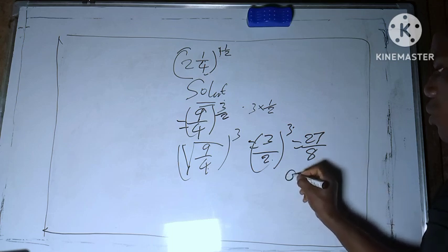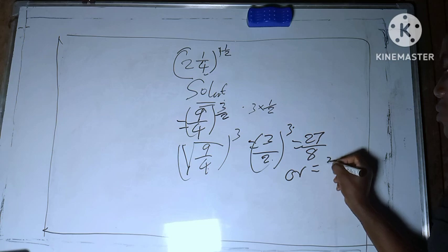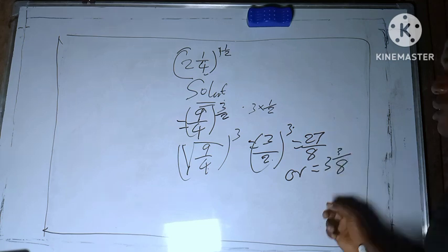This is the answer. Or you can change it to mixed fraction. You can say 3 and 3 over 8. This is the answer.